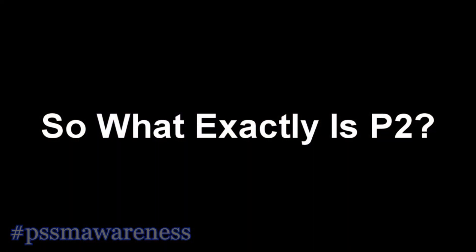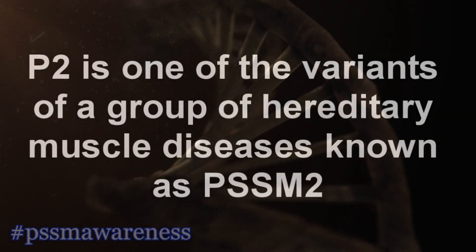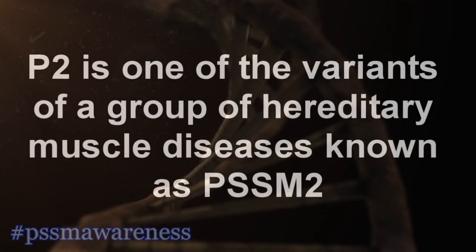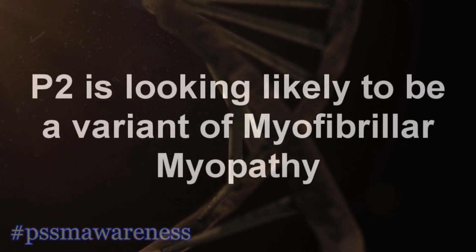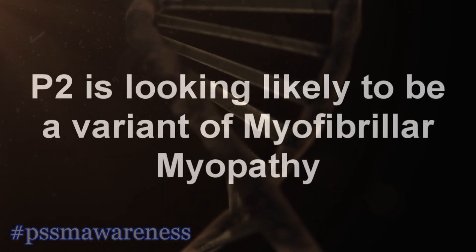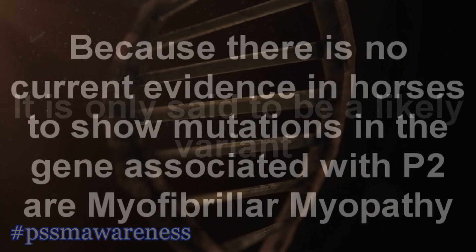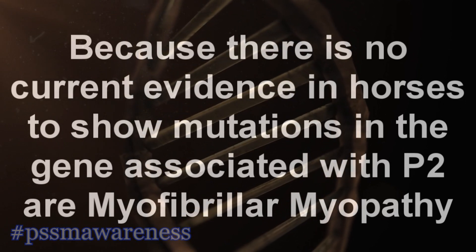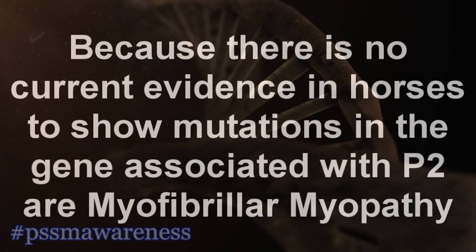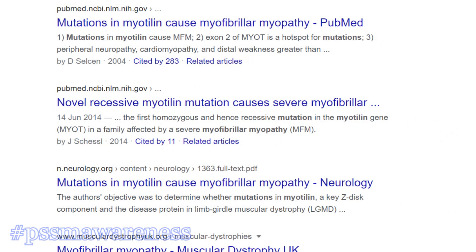So what exactly is P2? P2 is one of the variants of a group of hereditary muscle diseases known as PSSM2. P2 is looking likely to be a variant of myofibrillomyopathy. It is only said to be a likely variant because there is no current evidence in horses to show mutations in the gene associated with P2 or myofibrillomyopathy. However, there is plenty of evidence of this in humans.